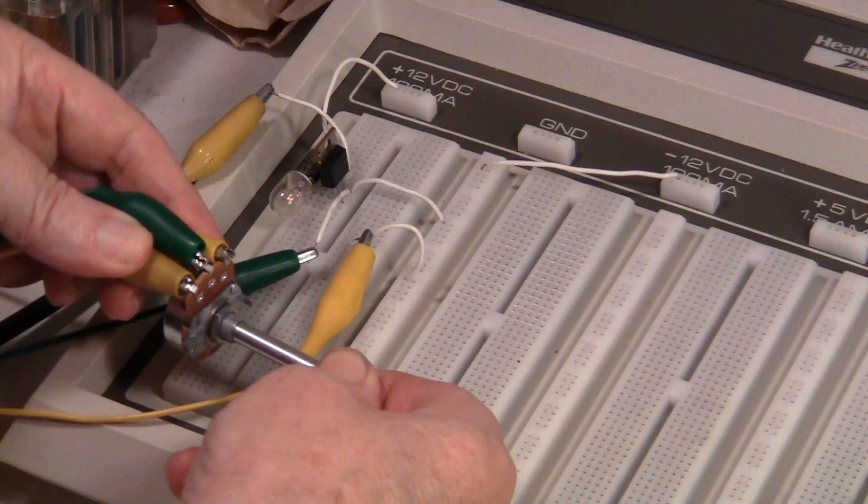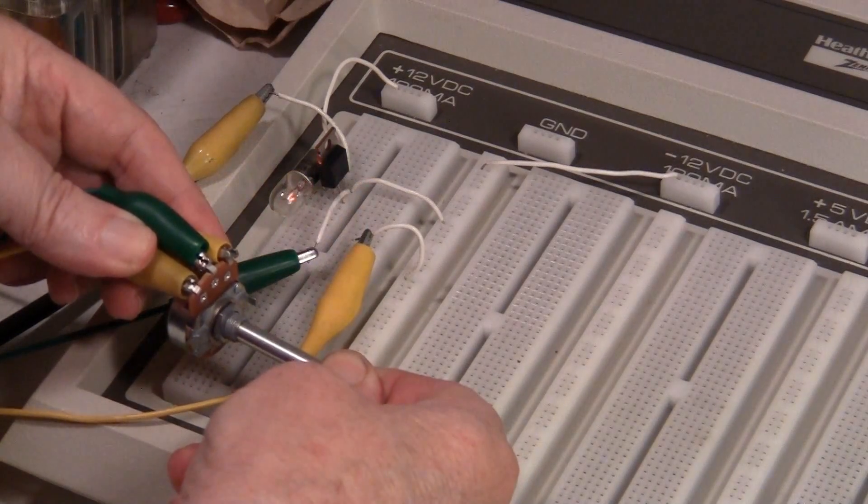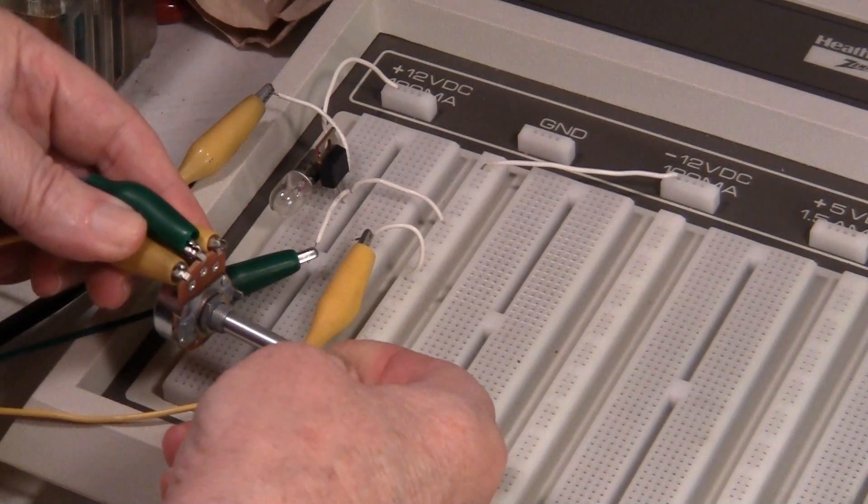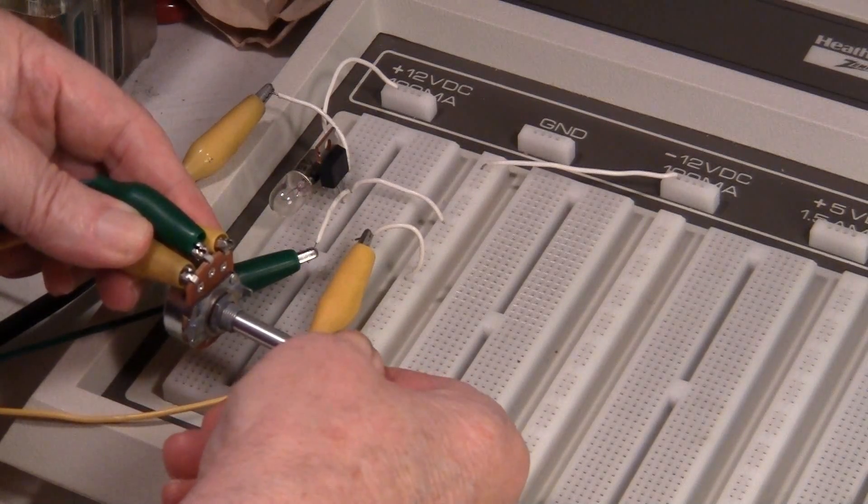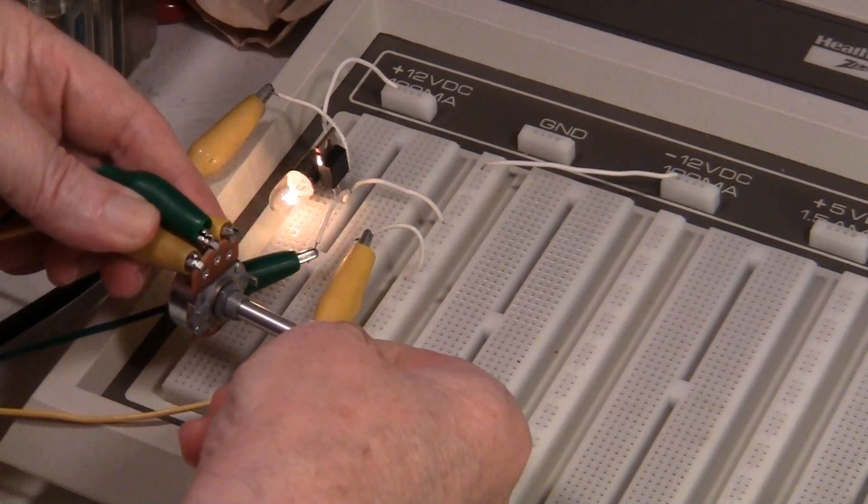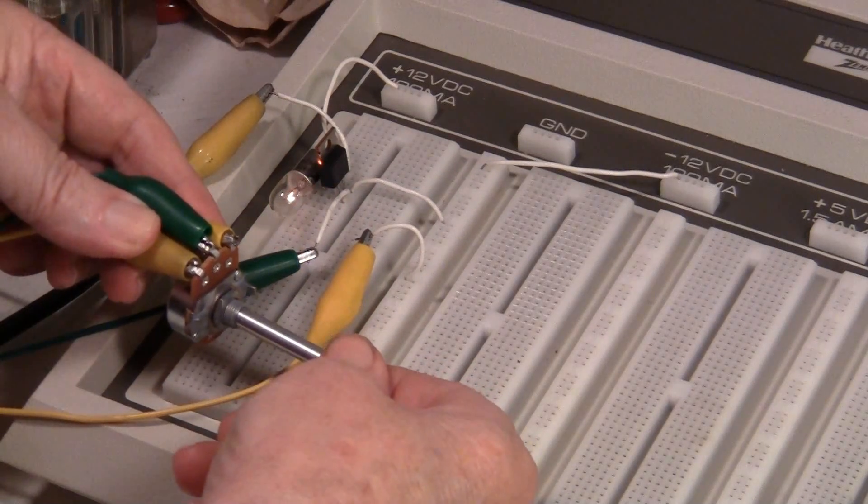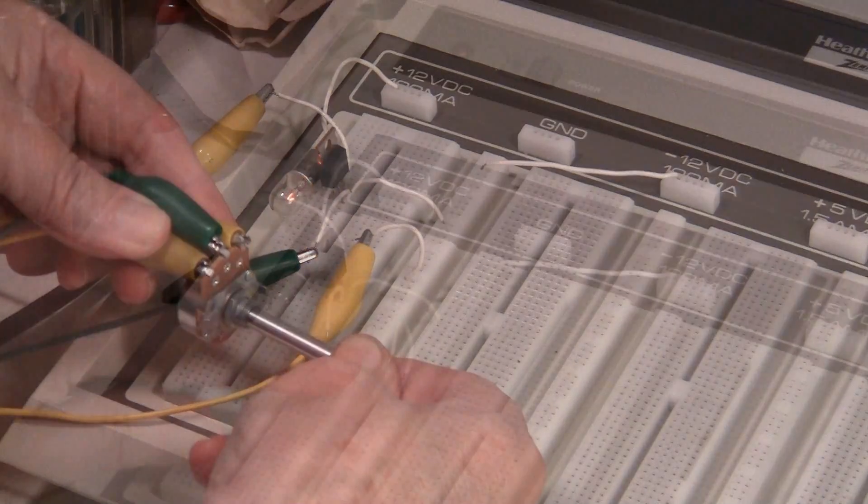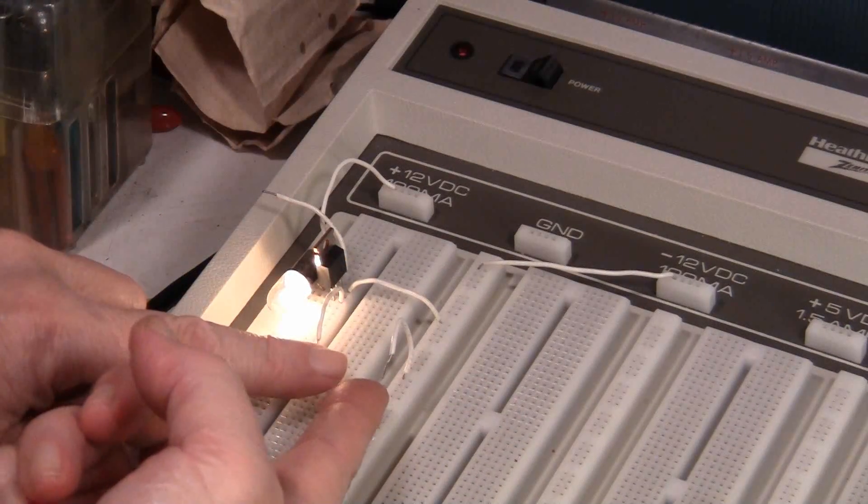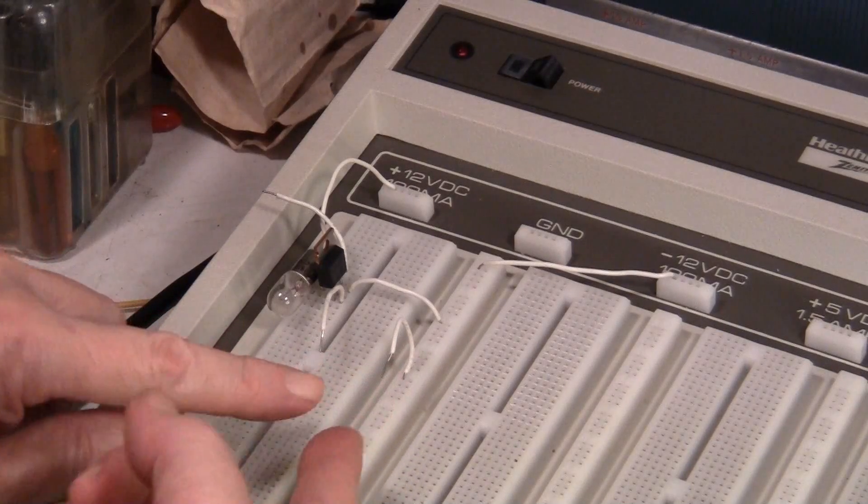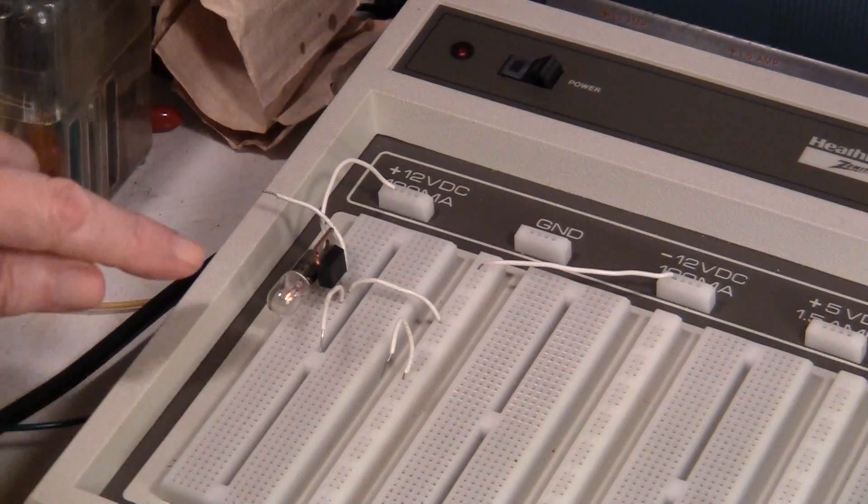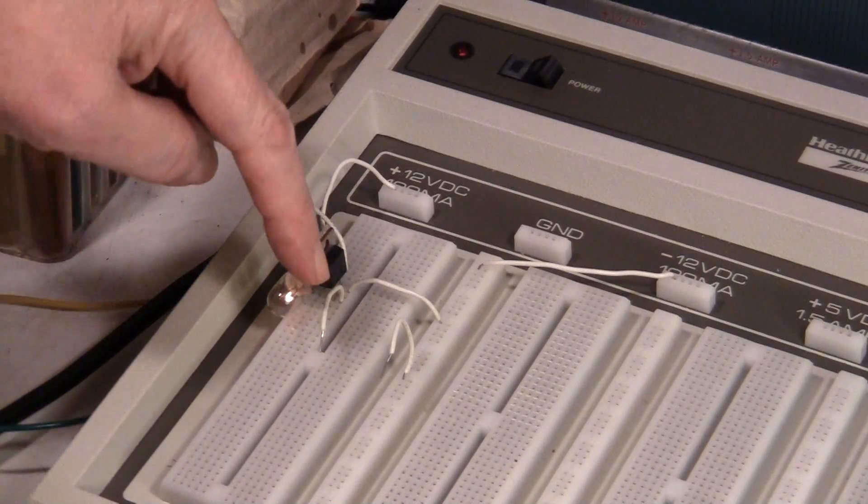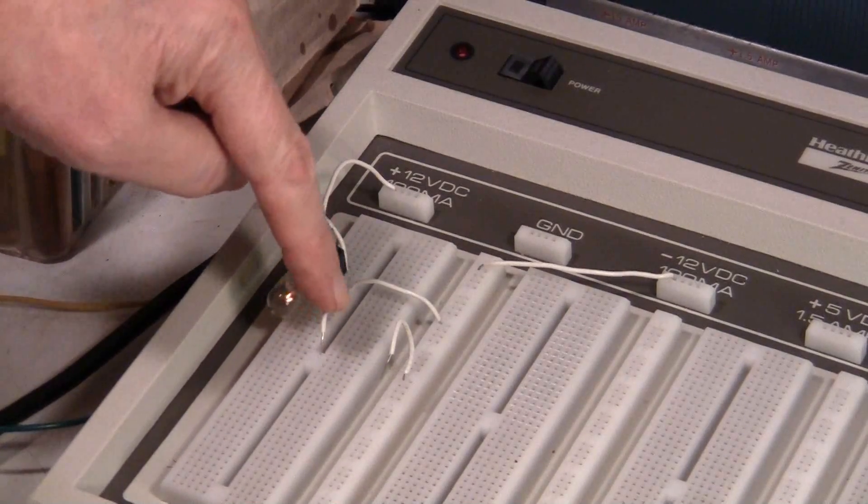So biasing a transistor or a tube, and in this case a MOSFET transistor, makes the circuit work properly and makes it stable. And without biasing, it's rather unpredictable as to what could happen. Thanks for watching.